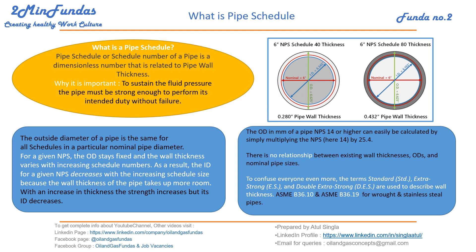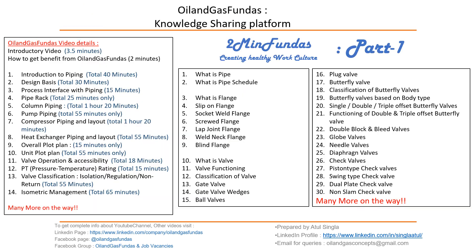To make it simple, always refer to the ASME standards B36.10 and B36.19 for carbon and stainless pipe dimensions. Always refer to these to get the correct ODs and IDs, or if you can memorize all the values, that works too.